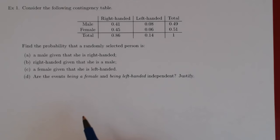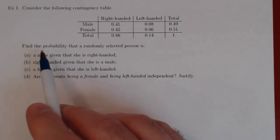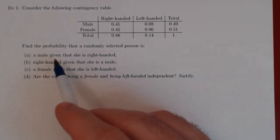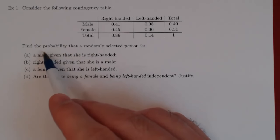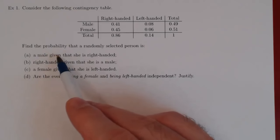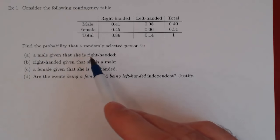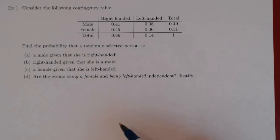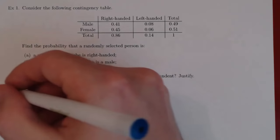Look at the first question. We are asking, from our sample, if we randomly select a person, what is the probability that we have a male given that the person is right-handed?